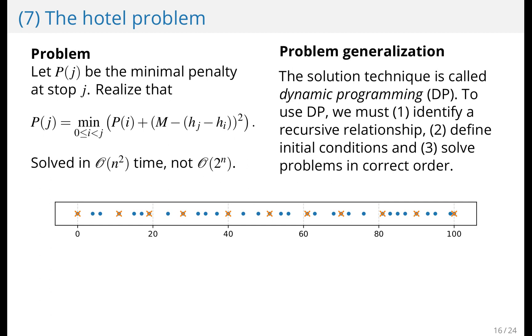This problem can be formulated as a dynamic program. And to do so you have to realize that if you know the minimal penalty at every index smaller than j, then to compute the minimal penalty going to j, you consider staying in every hotel before j, and the minimal penalty there, plus the penalty of moving from that hotel to j in the previous day.